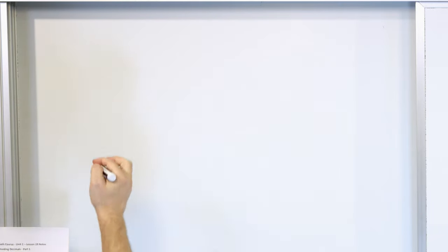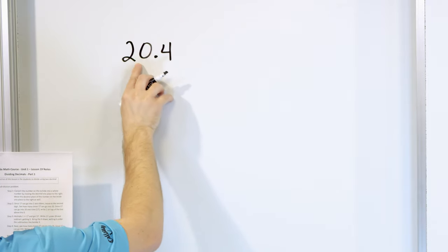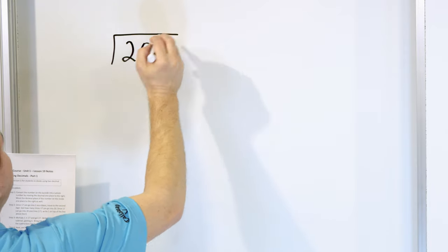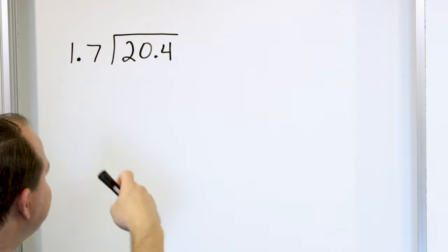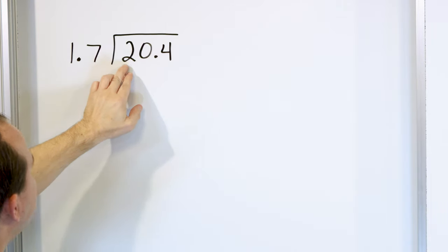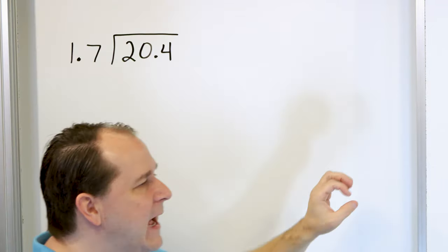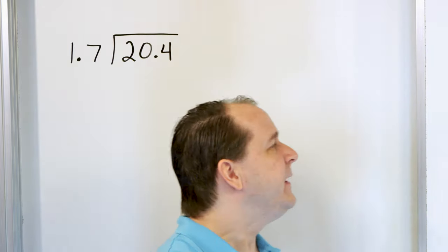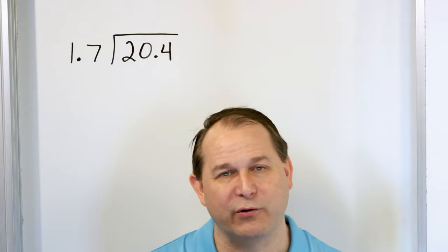So once we have those two things out of the way, what we want to do is divide a decimal by another decimal. For instance, let's say we have 20.4 — we have 20 whole sandwiches and 0.4 of another, which is a little bit less than half of another sandwich — and we want to divide it by 1.7. So we have a decimal divided by another decimal. We could draw a picture and see how many times 1.7 fits into 20.4, but that's not going to be a great way to solve a lot of problems.